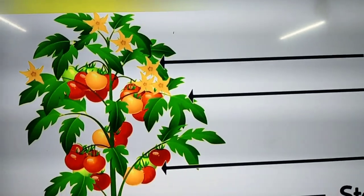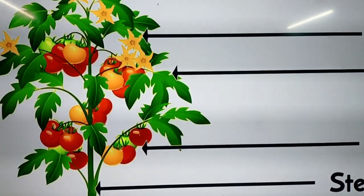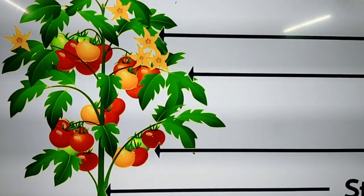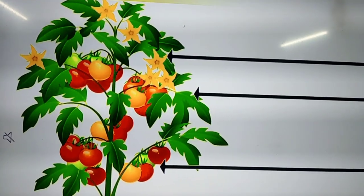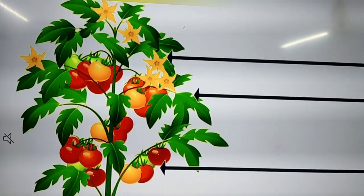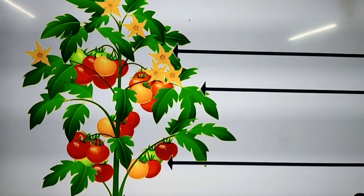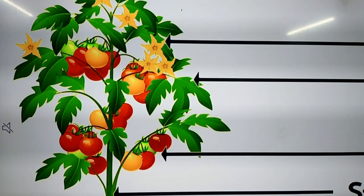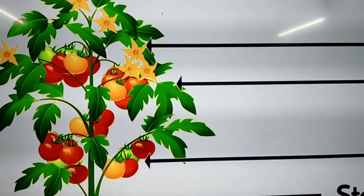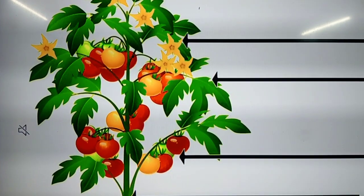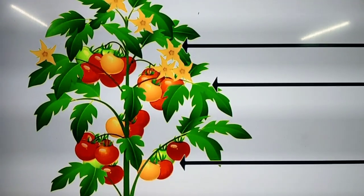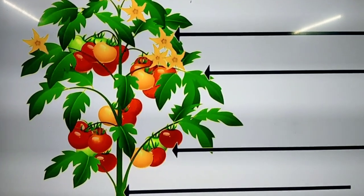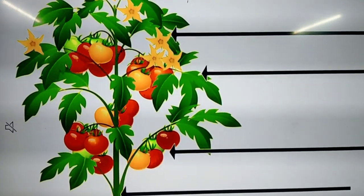As we all know, plants are living things. Like human beings, they also have different parts and each part has got different functions to carry out. Not only plants and animals — anything that you see around has got different parts, and each part has got a work to do. In the same way, plants have got different parts and they have different functions to carry out. So let us see what they are.